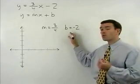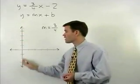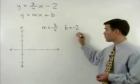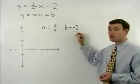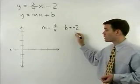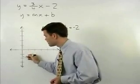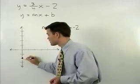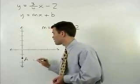Remember the y intercept of a line is the point where the line crosses the y axis and since our y intercept is negative two we start by plotting the point that is down two units on the y axis and we call that point a.